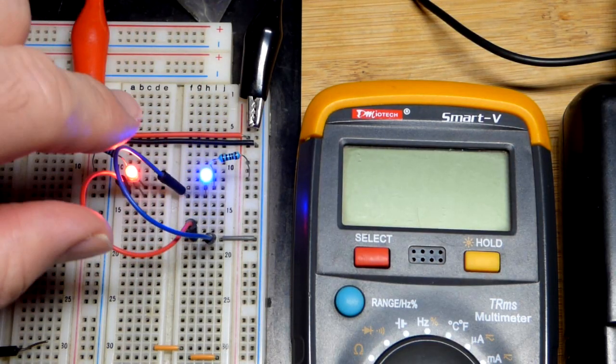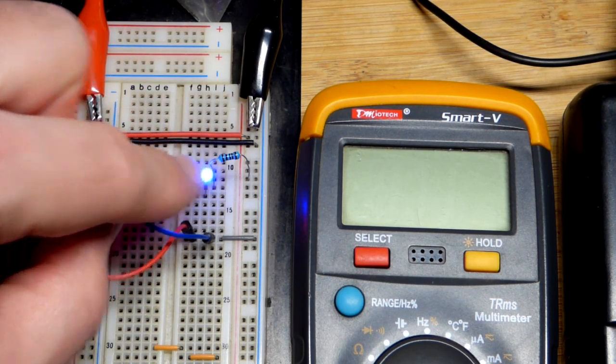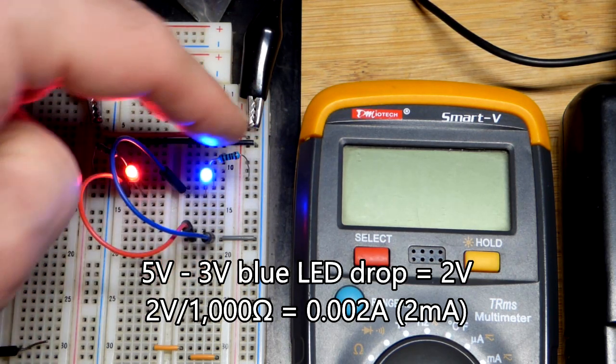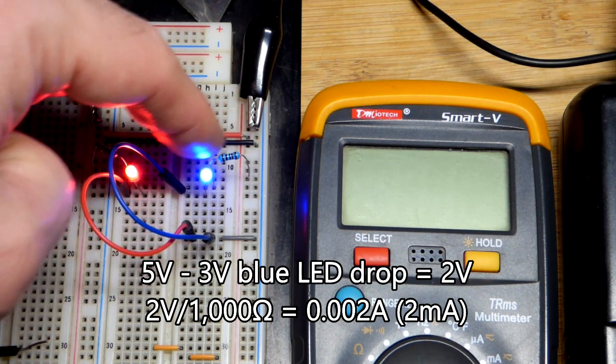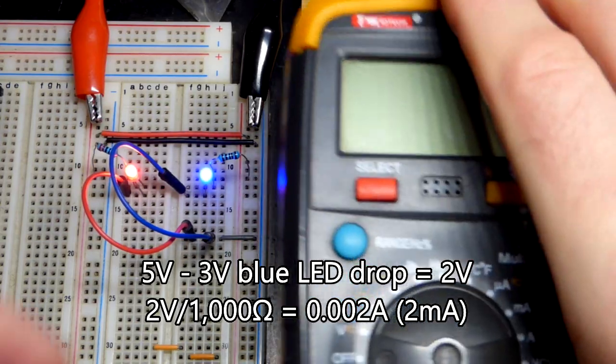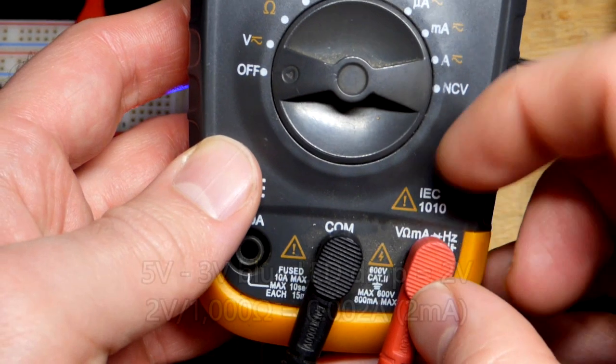And now we will get to the current. So last video, we did Ohm's law to measure the current through the red LED. We can do the same with the blue. So we're using a 5-volt power supply, 1,000 ohm resistor there. But the blue LED drops about 3 volts, so that's 2 volts across the 1,000 ohm resistor, and you take 2 volts divided by 1,000 ohms, you can expect 2 milliamps of current.